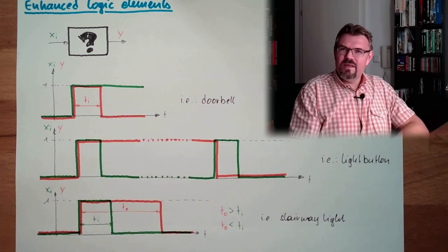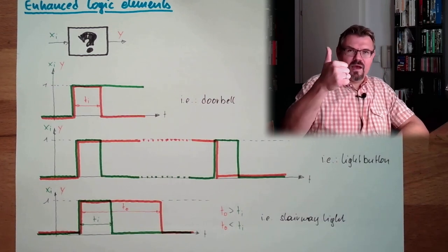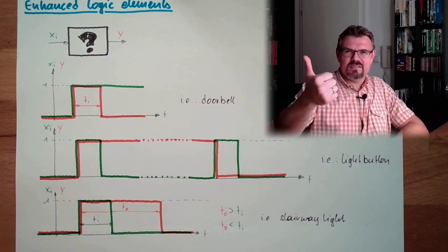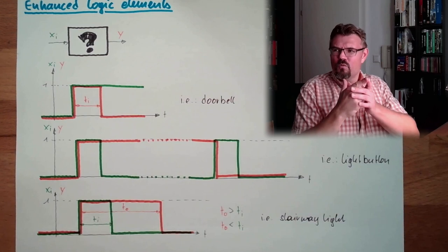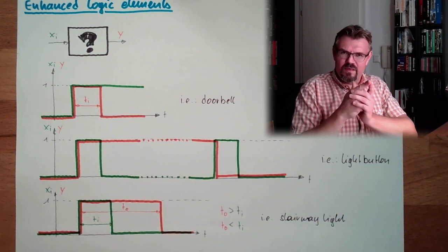So we need things. We need timers. We need to measure or delay something. And we need memory. Those are the two things we have to think about.